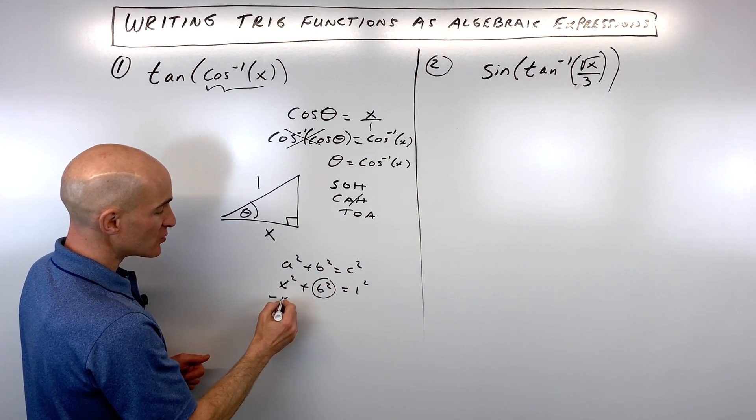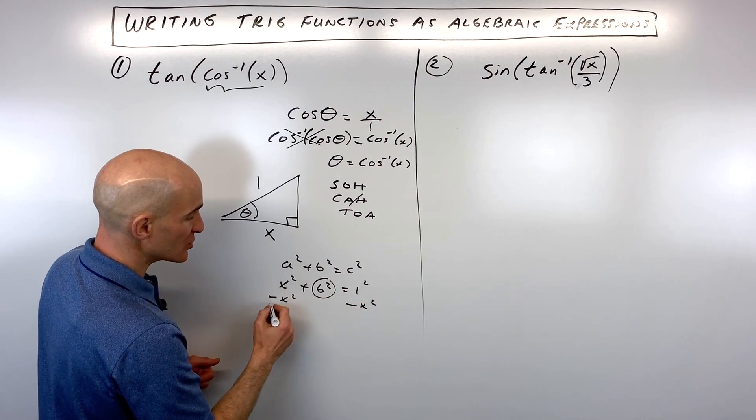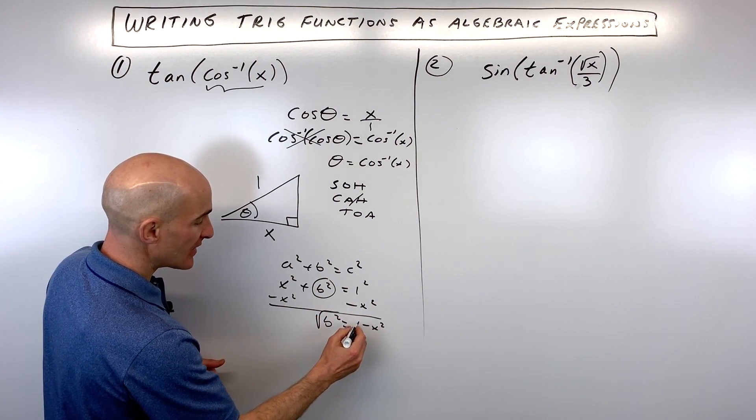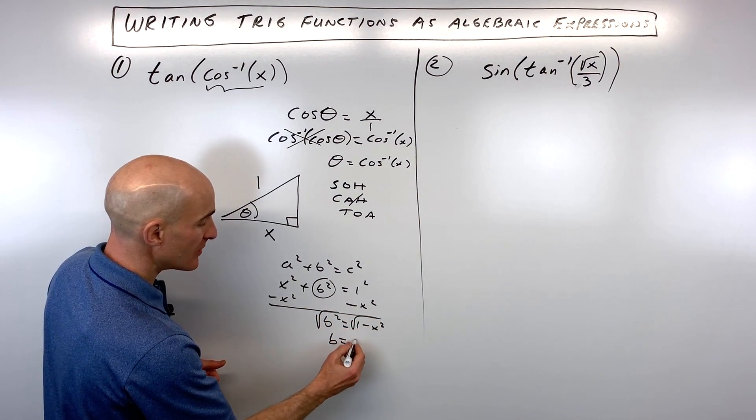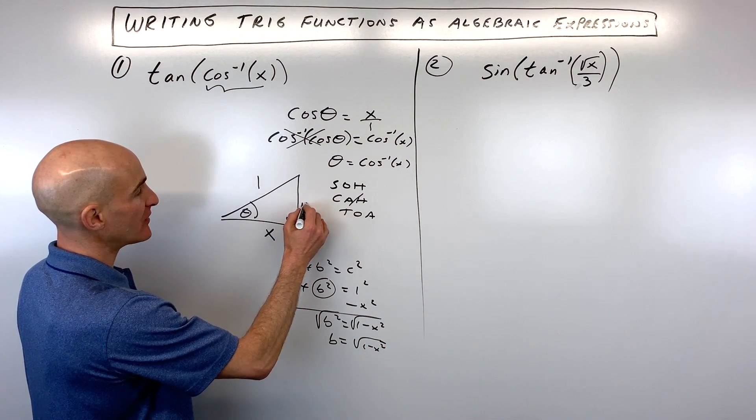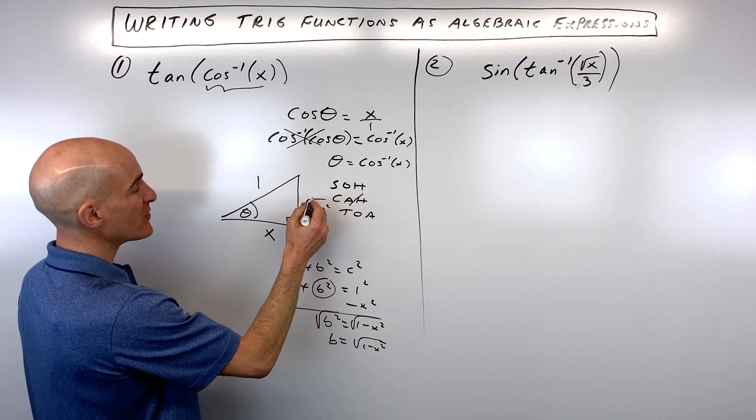So to solve for b now, we're going to subtract x squared from both sides of the equation. We've got b squared equals one minus x squared. And if we take the square root of both sides, you can see that b equals the square root of one minus x squared. So I'm going to put that right here for our missing side.